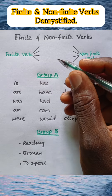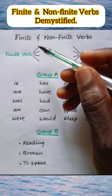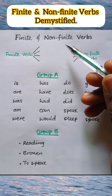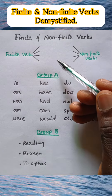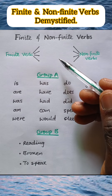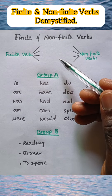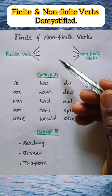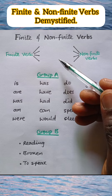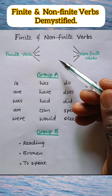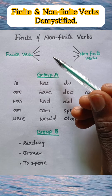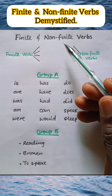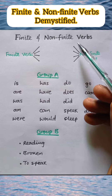I want to demystify the subject of finite and non-finite verbs. I have treated this topic two times before, but I want to here simplify it in such a way that everyone will understand. What are finite verbs and what are non-finite verbs?